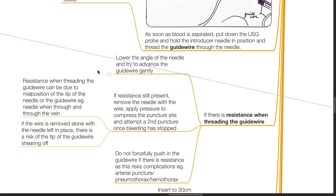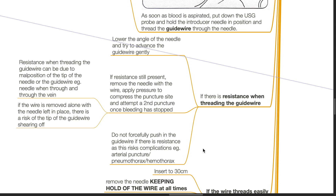Resistance when threading the guide wire can be due to malposition of the tip of the needle or the guide wire, such as when the needle punctures through and through the vein. If the wire is removed alone with the needle left in place, there is risk of the tip of the guide wire shearing off. Do not forcefully push in the guide wire if there is resistance, as this risks complications such as arterial puncture, pneumothorax, and hemothorax.